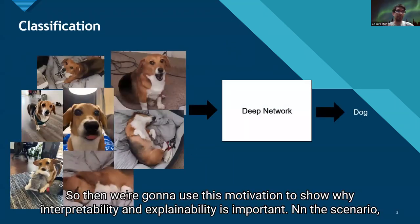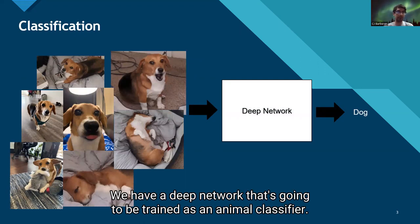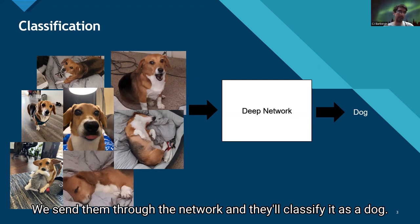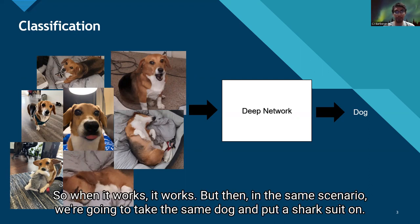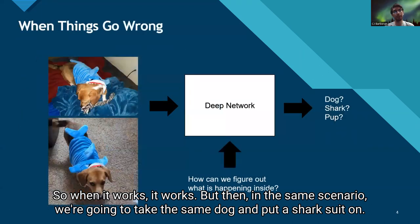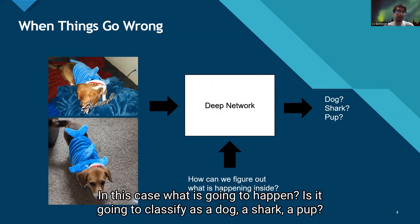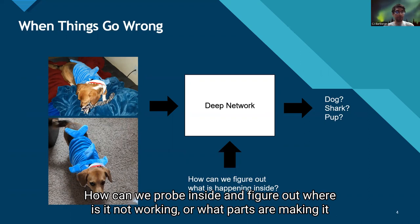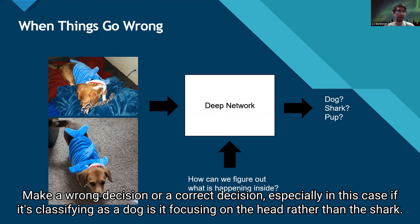We're going to use this motivation to show why interpretability and explainability is important. In this scenario, we have a deep network trained as an animal classifier. We have a cute corgi-beagle dog where we send multiple images through the network and it classifies it as a dog — when it works, it works. But then we take the same dog and put a shark suit on it. In that case, is it going to classify it as a dog, a shark, or a pup? We want to understand when it's not working.